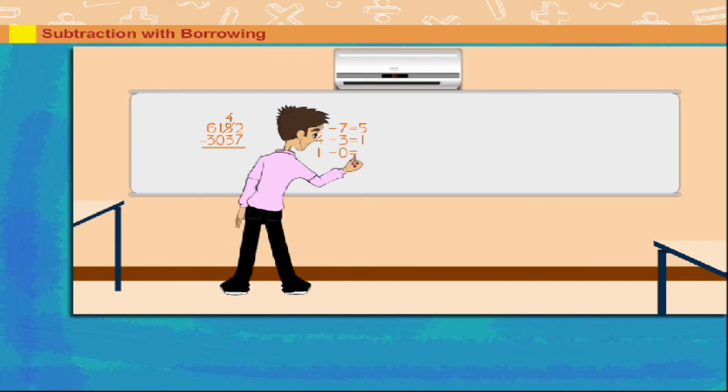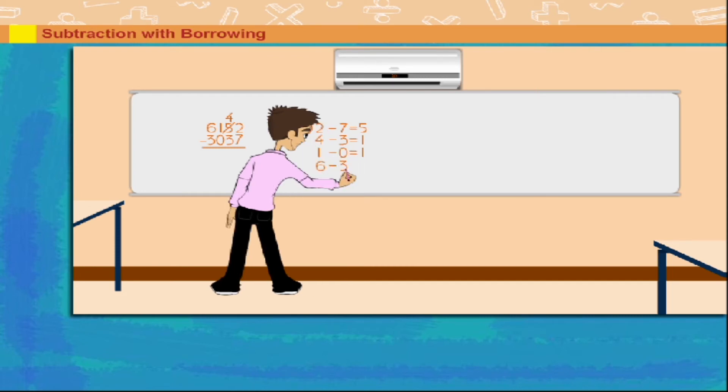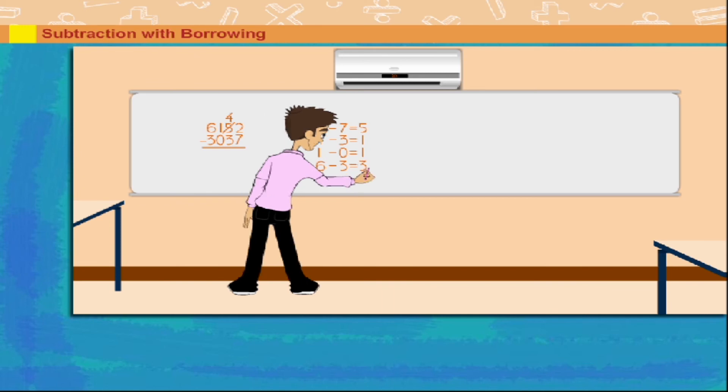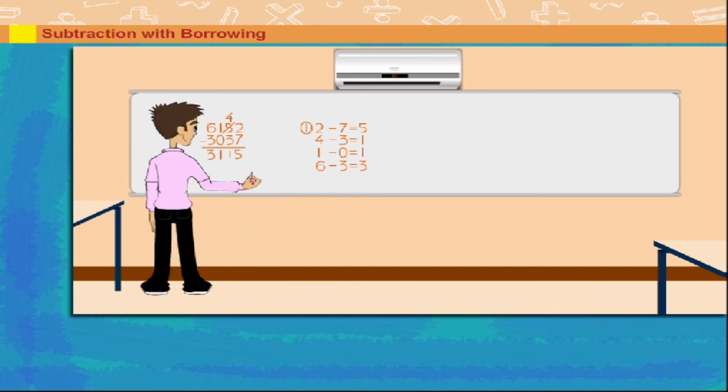Now the hundreds. 1 minus 0 is 1. And then the thousands. 6 minus 3 is 3. He writes 3,115 as the answer.